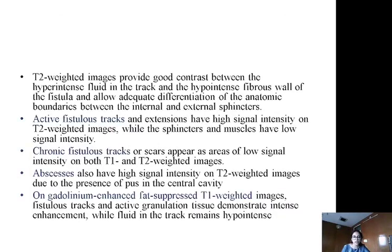T2-weighted images provide good contrast between the hyperintense fluid in the tract and the hypointense fibrous wall of the fistula, and allow adequate differentiation of the anatomic boundaries between the internal and external sphincters. Active fistula tracts and extensions have high signal intensity on T2-weighted images, while sphincters and muscle have low signal intensity. Chronic fistula tracts or scar appear as areas of low signal intensity on both T1- and T2-weighted images. Abscesses also have high signal intensity on T2-weighted images due to the presence of pus in the central cavity.